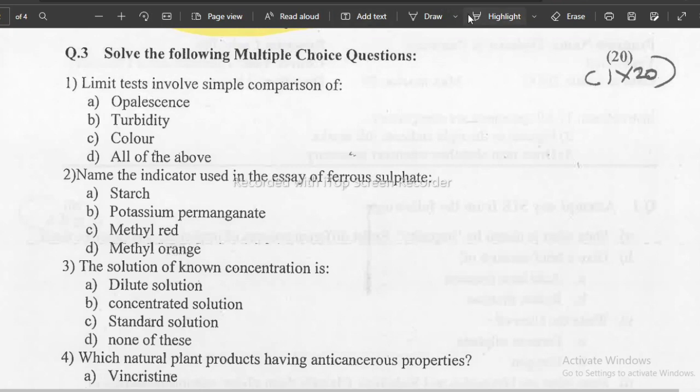Question: Solve the following multiple choice questions. First question is limit test involves simple comparison of. Options are: opalescence, turbidity, color, and all of the above. So answer is all of the above, answer is D.